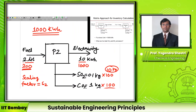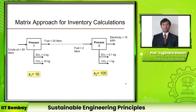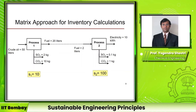What we have essentially done here is calculated scaling coefficients. In order to produce 1000 kilowatt hours, the second process has to be scaled by 100 while the first process has to be scaled by 10. This concept of scaling coefficients — or scaling factors — is important and we will use it subsequently as the basis for the matrix approach.